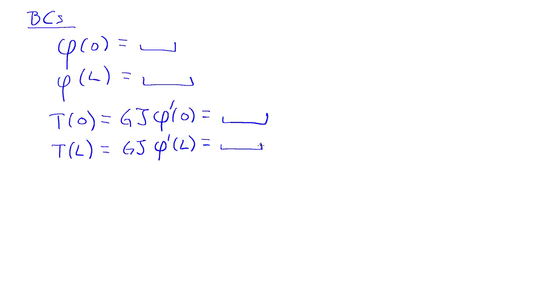Of course, one can have more complicated boundary conditions, but these are the basic ones. So this one here is for a built-in bar at one end. This would be for a built-in bar at the other end. So let's say I put a zero here and here.